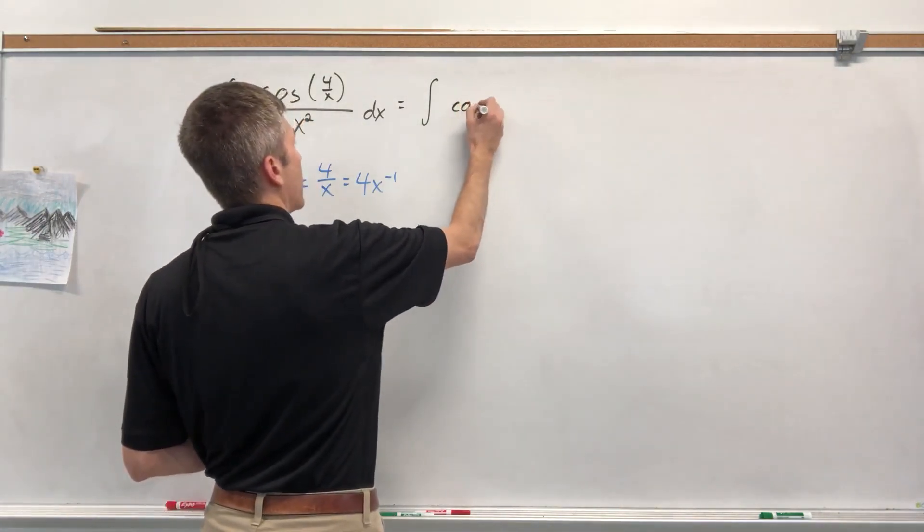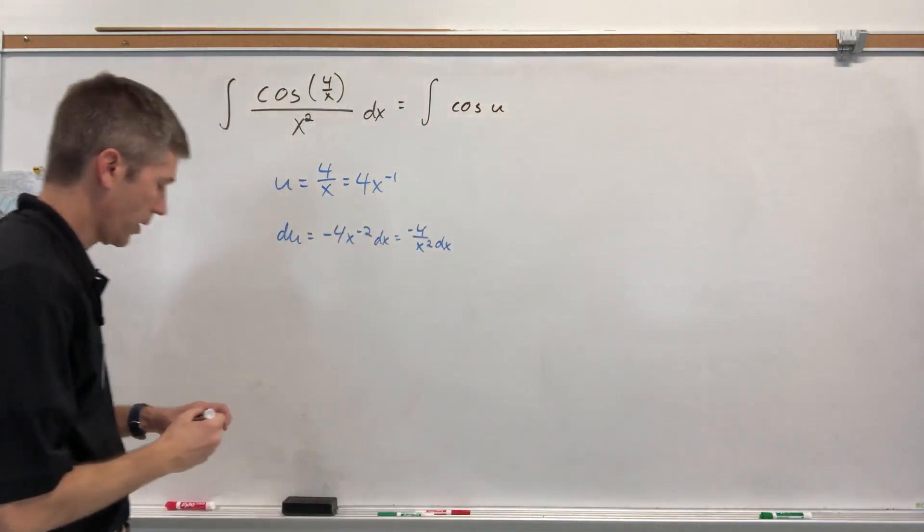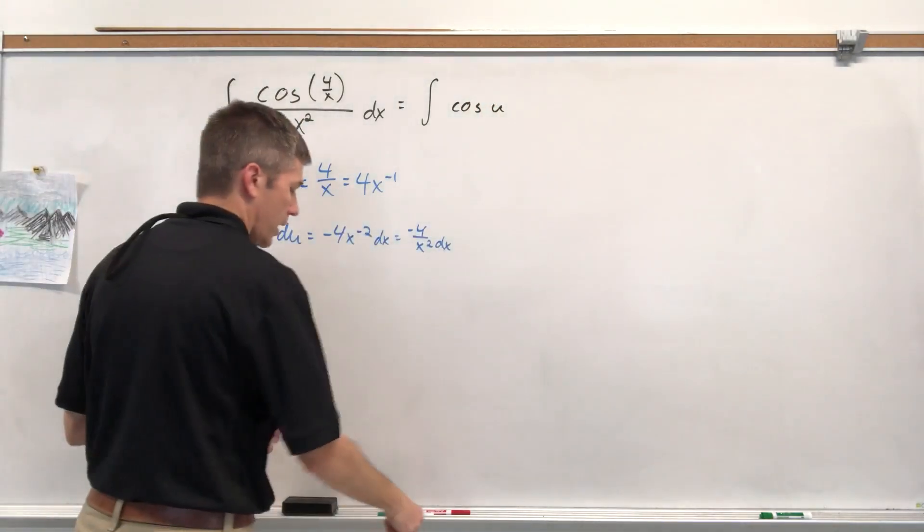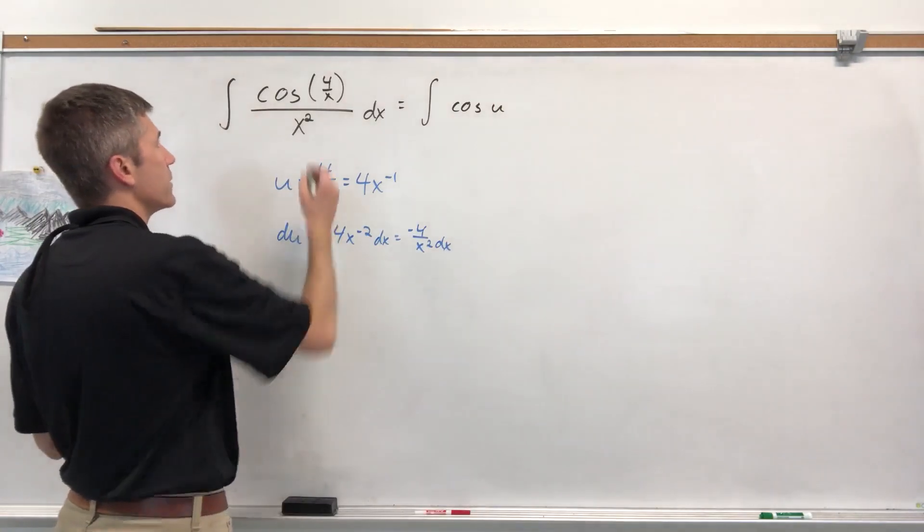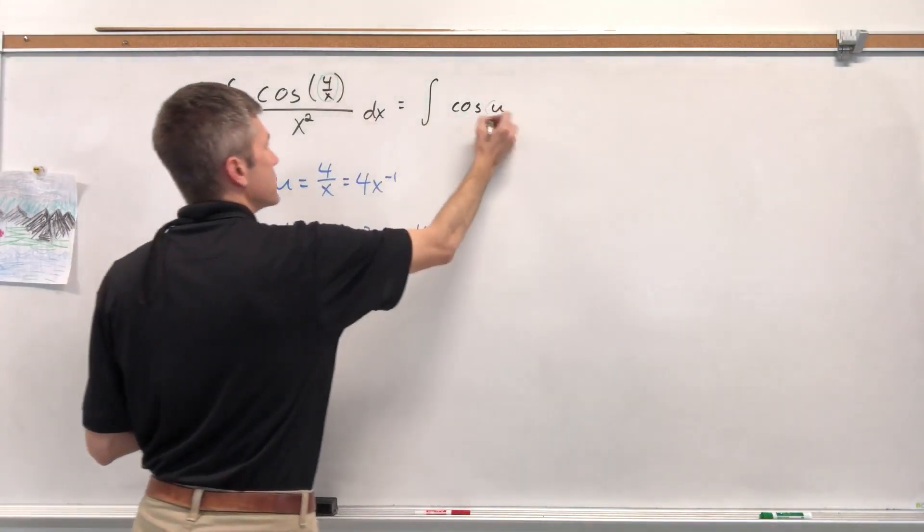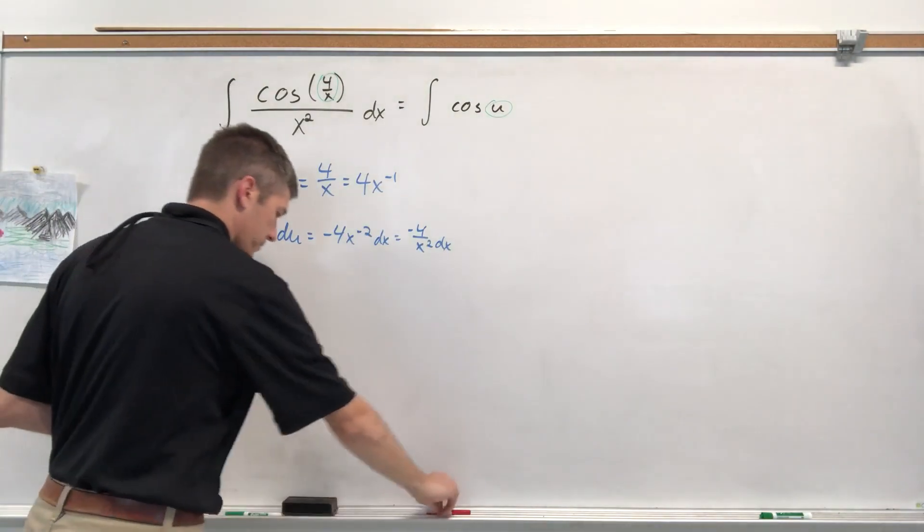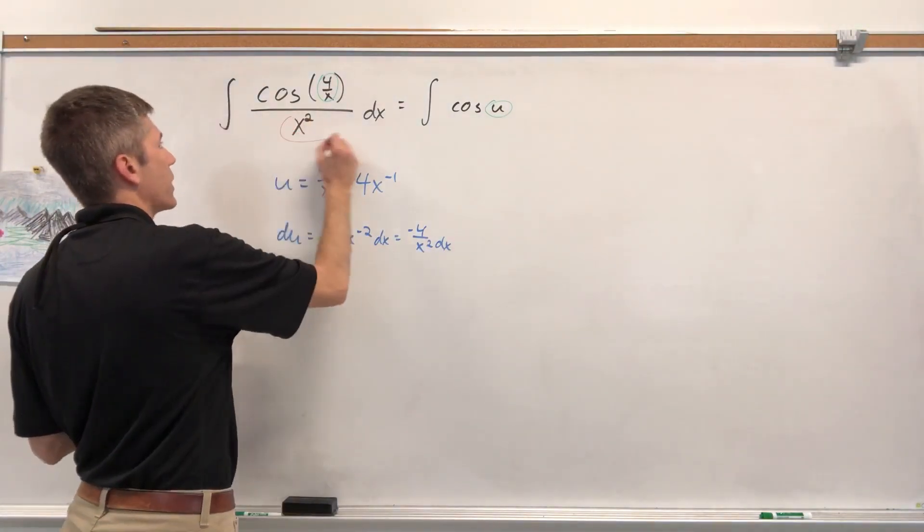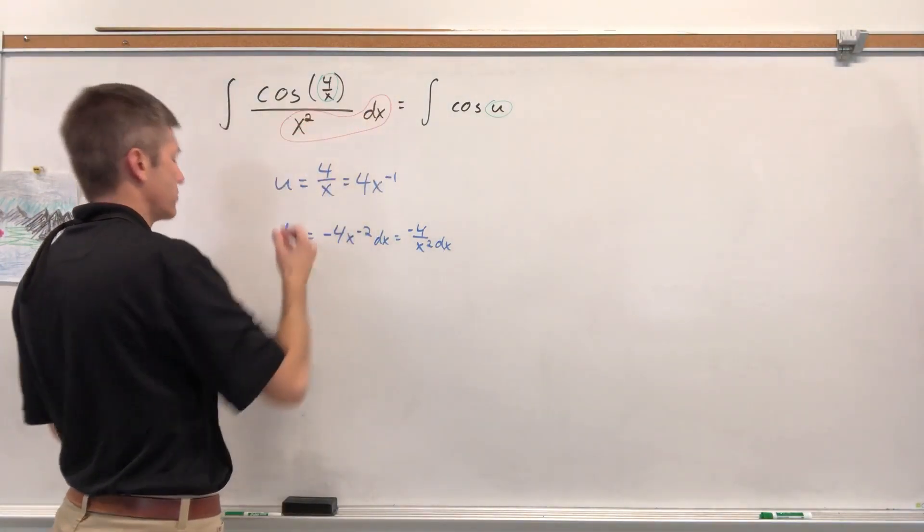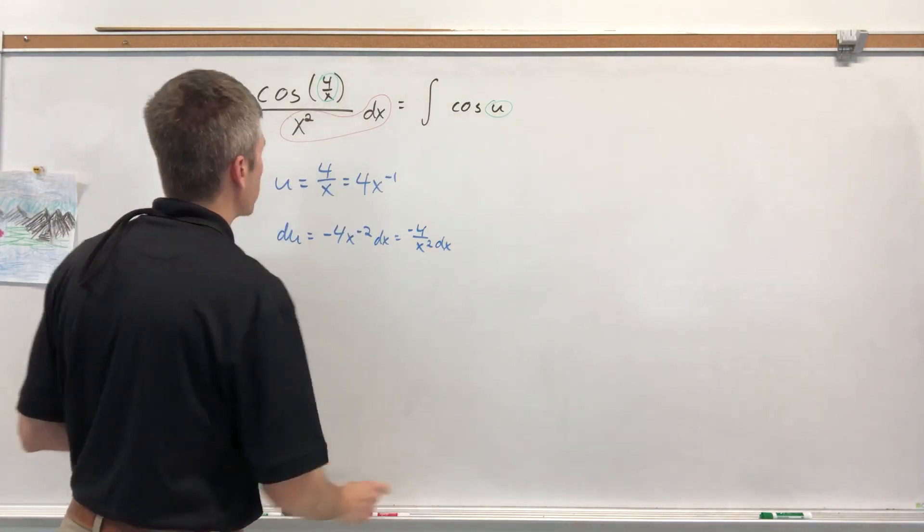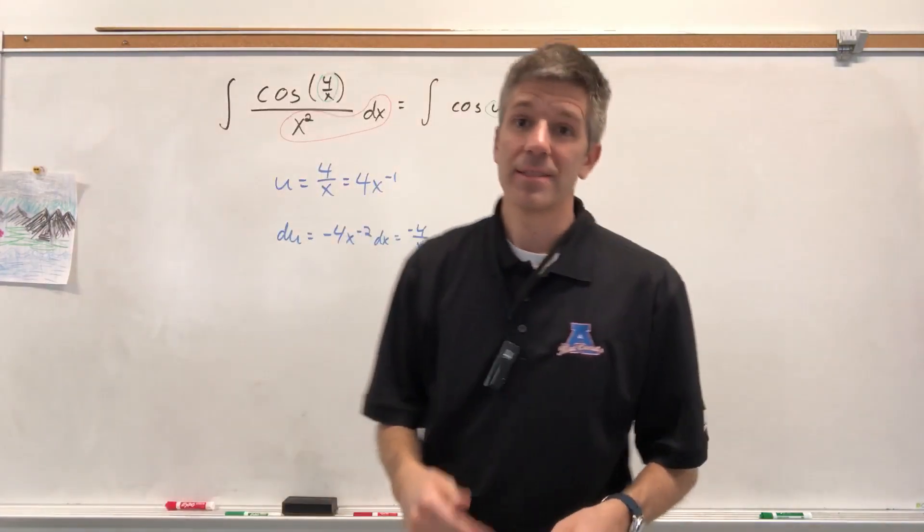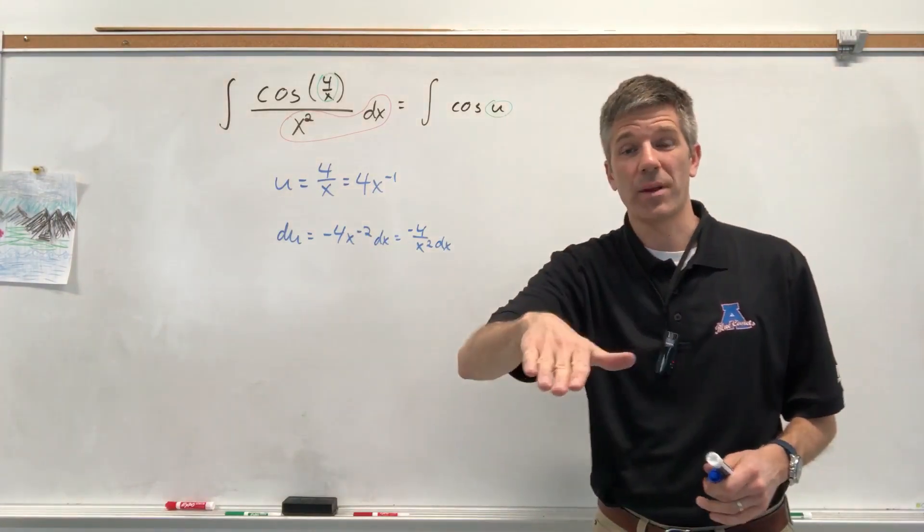So cosine of U, you can't watch it. I'm standing in your way, can you? And again, we're going to circle things. This is U, taken care of so far. Well, what's left? X squared DX. Well, we'll take care of X squared DX, but it's not X squared DX. This is actually X squared in the denominator.